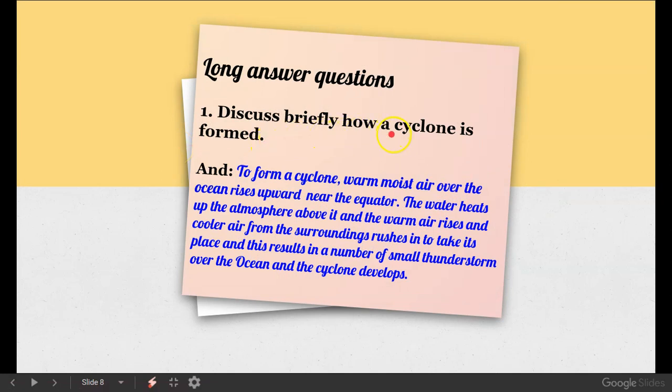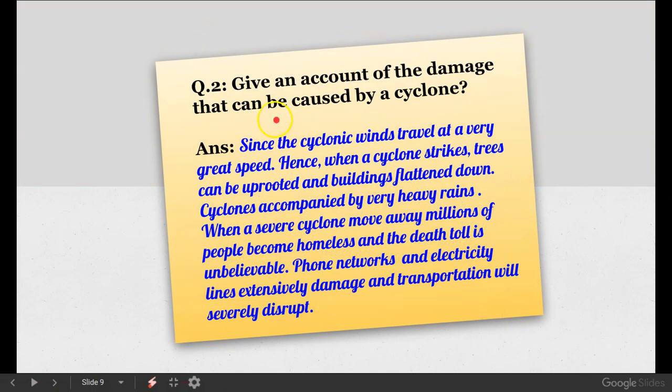So let's move. Here we come to our long answer question. Discuss briefly how a cyclone is formed. To form a cyclone, warm moist air over the ocean rises upward near the equator. The water heats up the atmosphere above it and the warm air rises, and cooler air from the surrounding rushes in to take its place. This results in a number of small thunderstorms over the ocean and the cyclone develops.